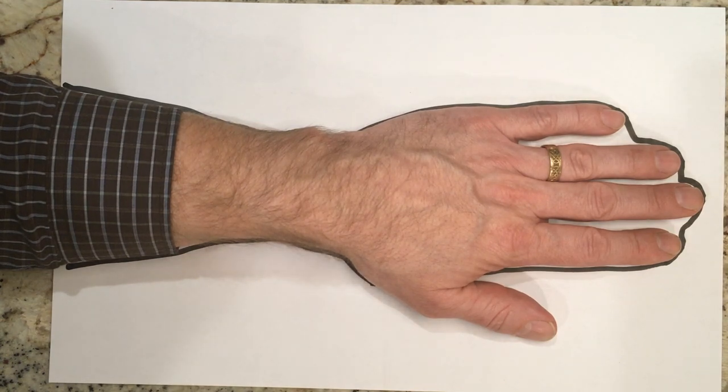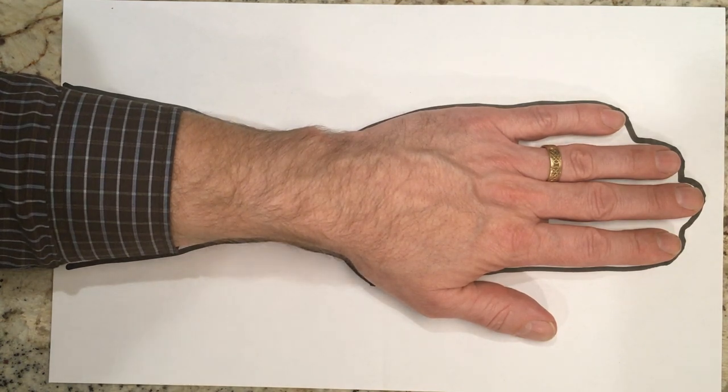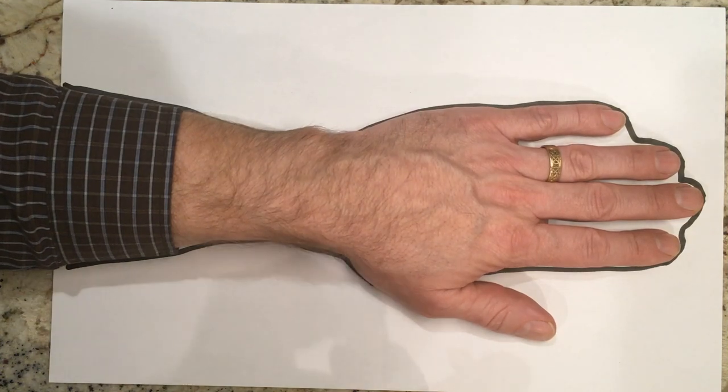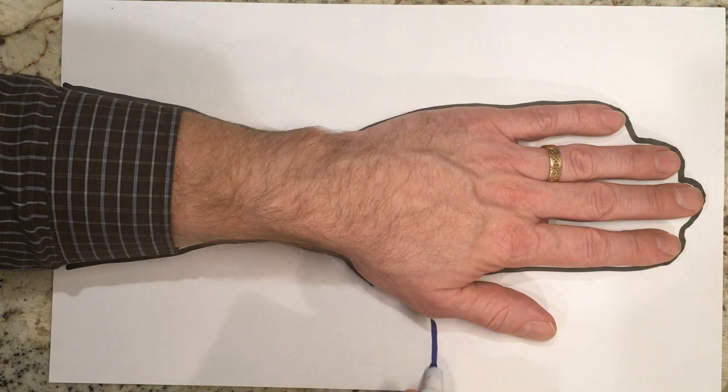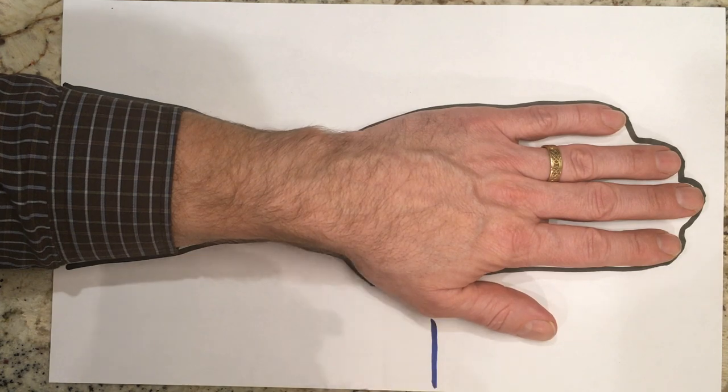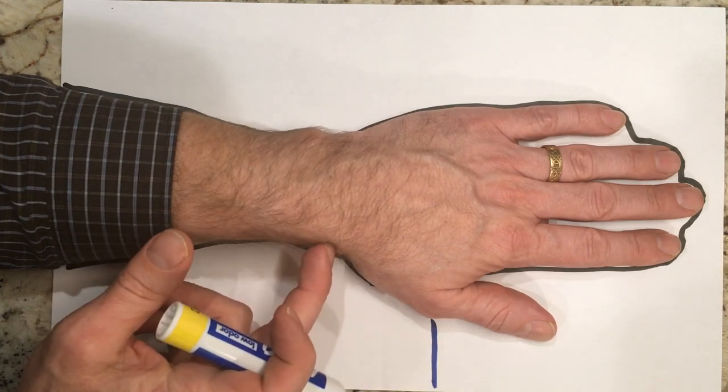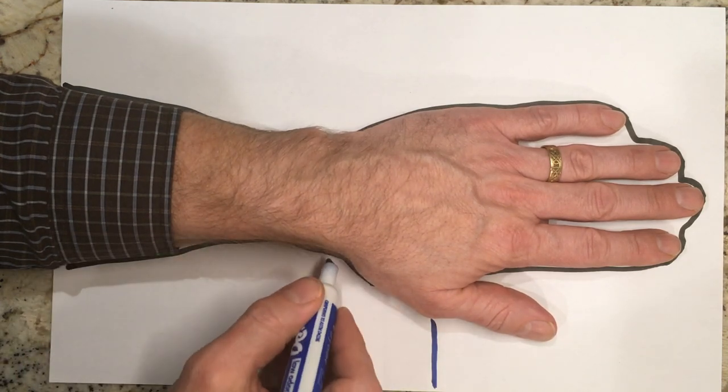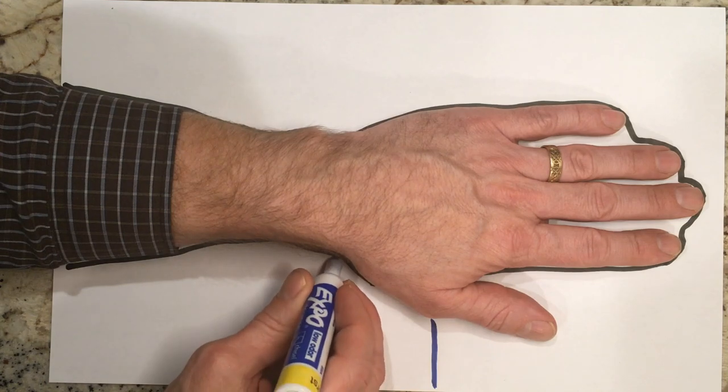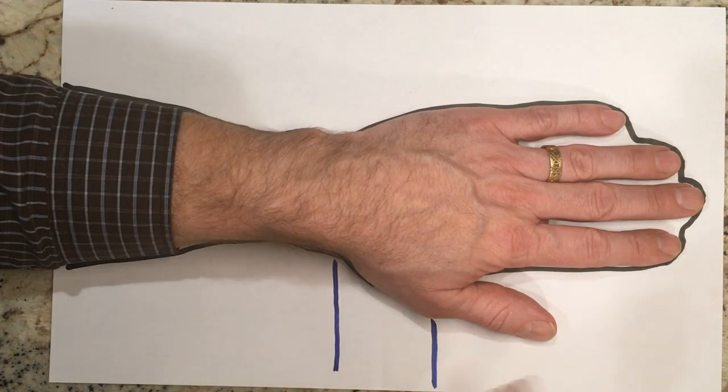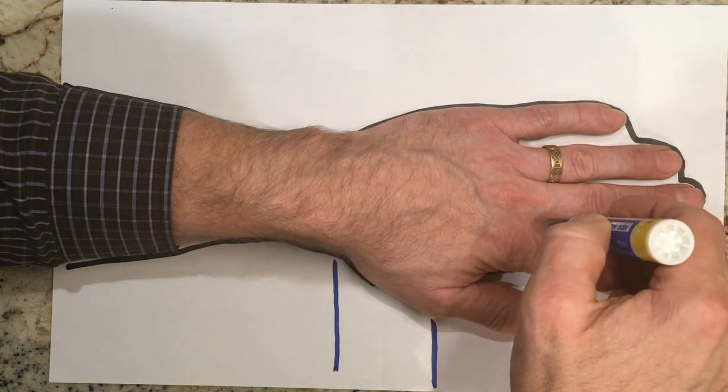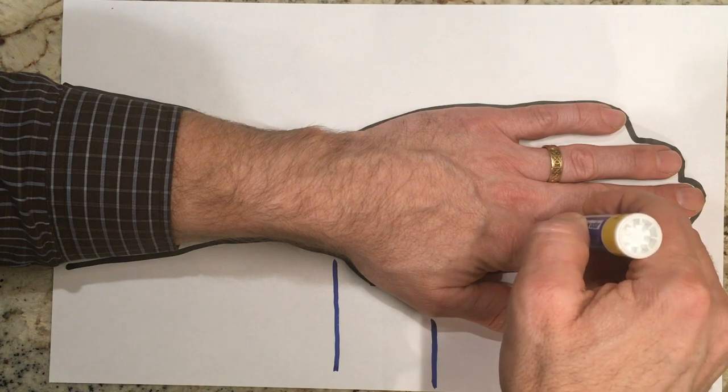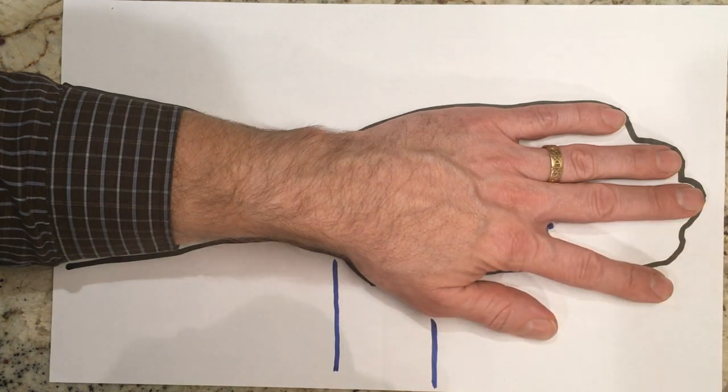Now once you've done that, you're going to draw some landmarks. The landmarks that you want to identify and draw are the thumb metacarpal phalangeal joint, the radial styloid, and the web space between the index and middle finger. Make a little dot there.